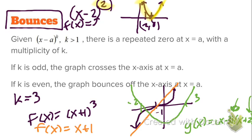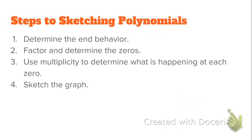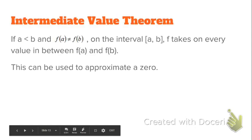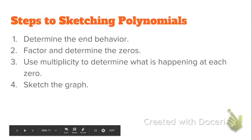So let's put that all together now. When we sketch a polynomial, we're first going to find the end behavior. Then we're going to find the zeros and put them on the x-axis. Then we're going to look at the multiplicity of each zero — whether the polynomial goes through the x-axis, bounces off, or snakes through. Then we connect the dots and sketch the graph, knowing we can only turn at most n minus 1 times, where n is the degree.